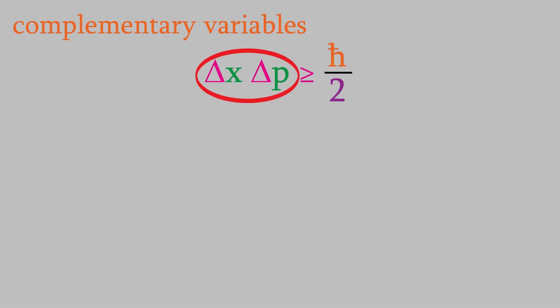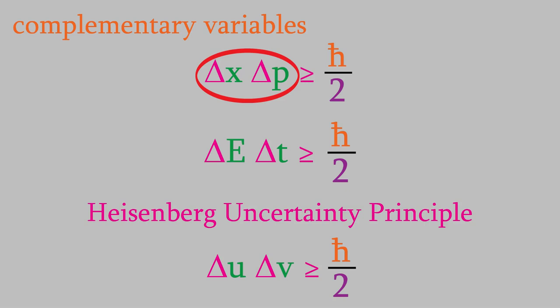For example, another pair of complementary variables are the energy of a particle, and the point in time when it has that energy. So, the precision with which we can know these two properties is limited by this equation. The idea that the precision of complementary variables is limited by this general equation is known as the Heisenberg uncertainty principle, and it's one of the most fundamental ideas in quantum mechanics.